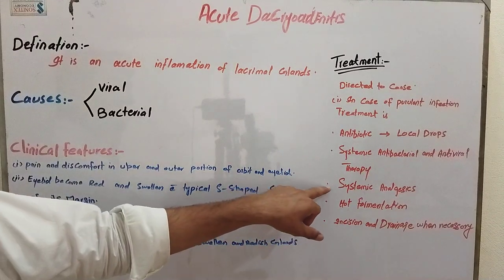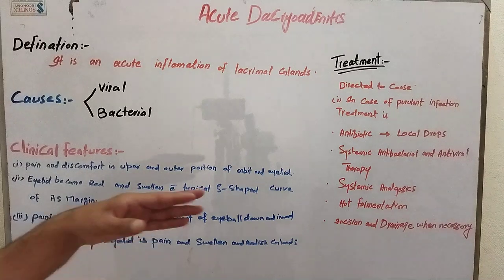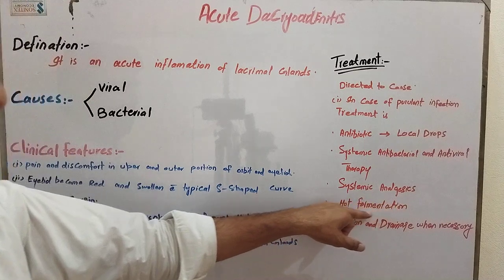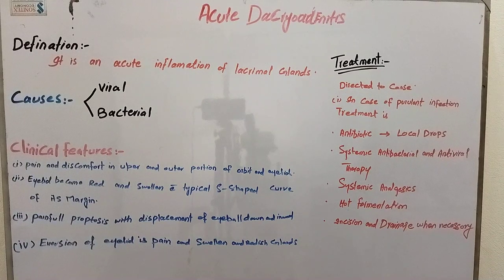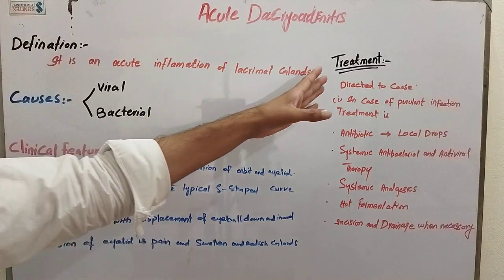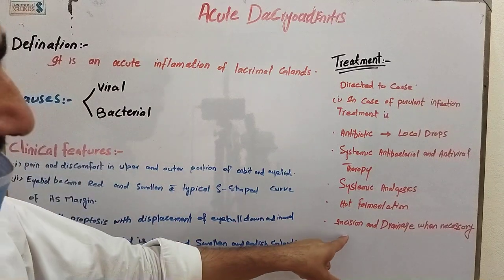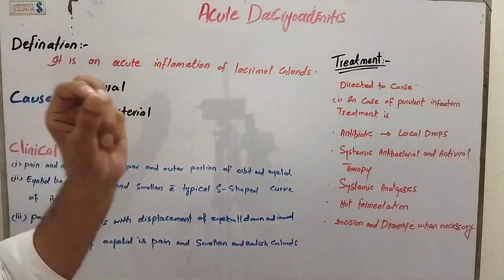Point number three, systemic analgesics — painkillers can be provided to the patient mostly in the form of tablets or injections. Number four, hot fermentation, which is also an important treatment. The last treatment — incision and drainage — is provided only when necessary, when all other types of treatment fail.